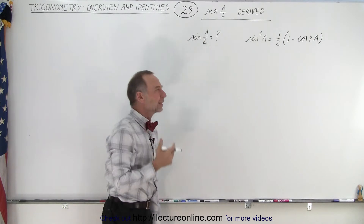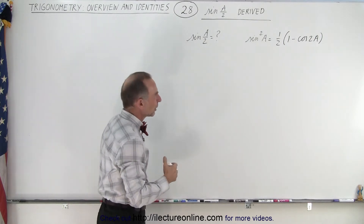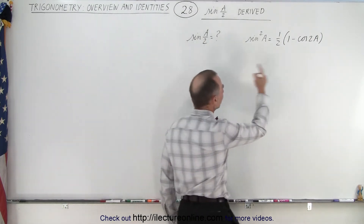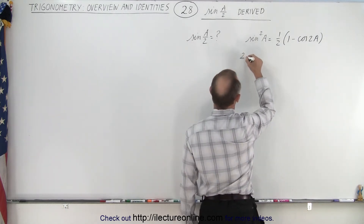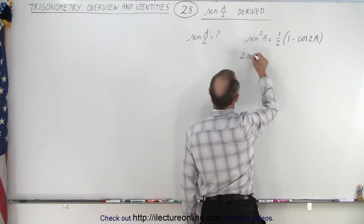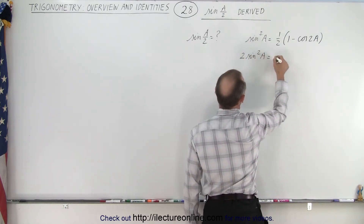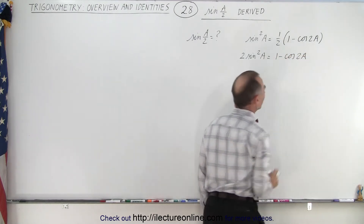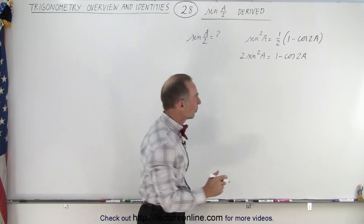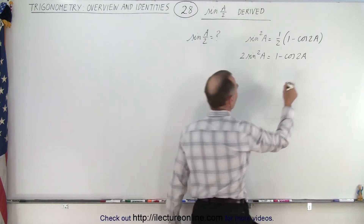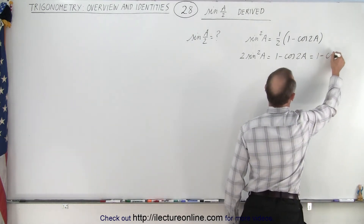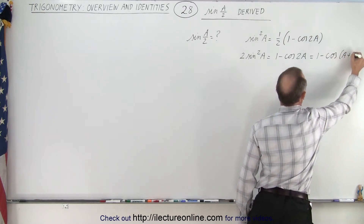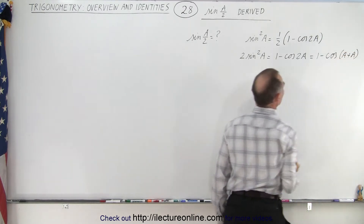Well, where did that come from? We can go ahead and show that that's indeed the case by first multiplying both sides by two, so we end up with two times the sine squared of A, which is equal to one minus the cosine of 2A. Then of course we have the cosine of a double angle, so this can be written as one minus the cosine of A plus A — the sum of the two angles A.